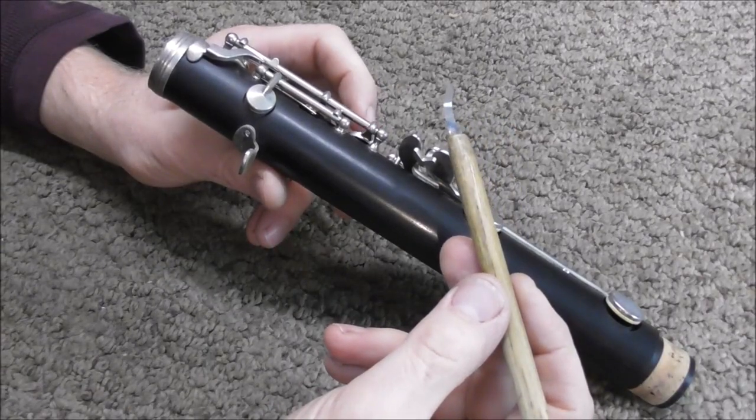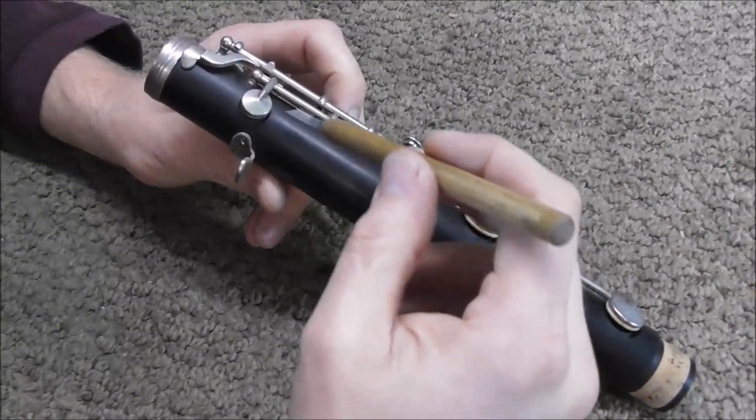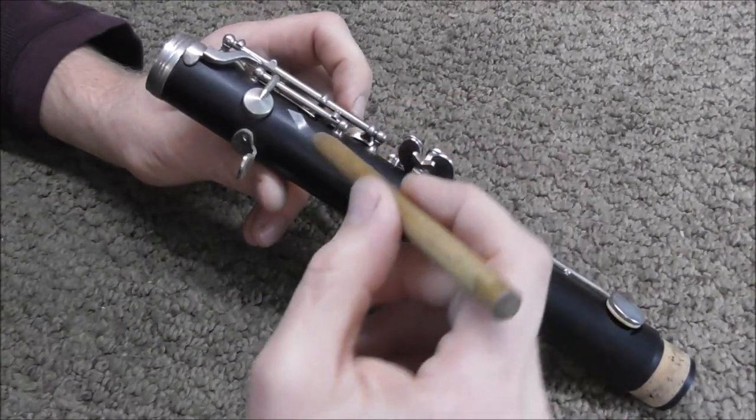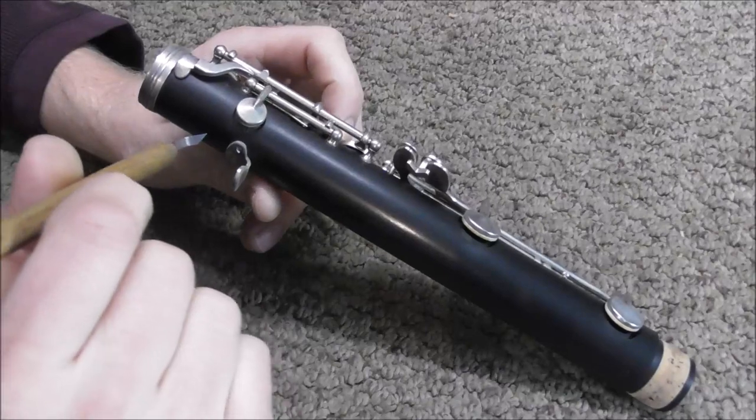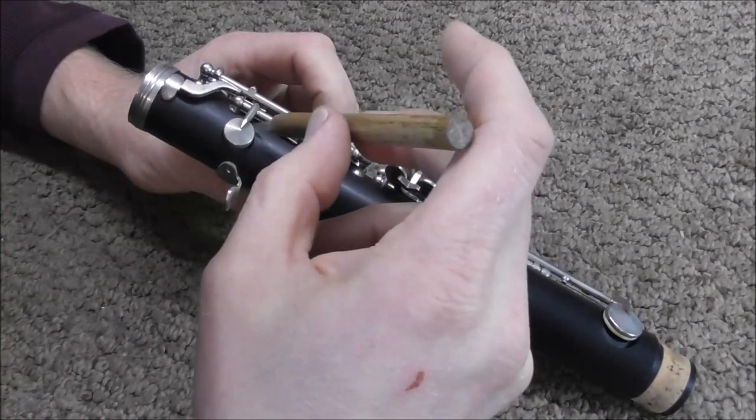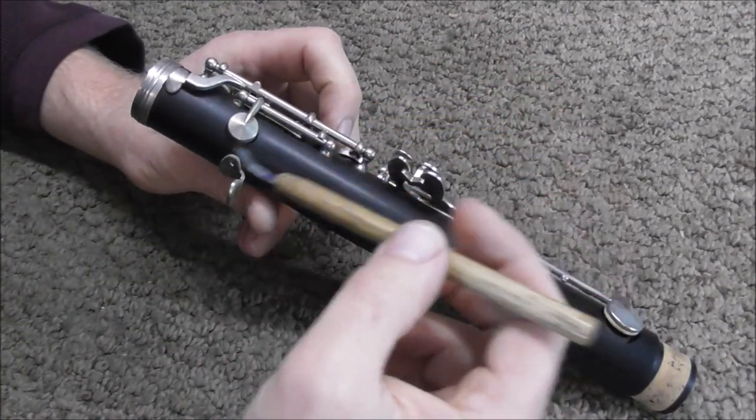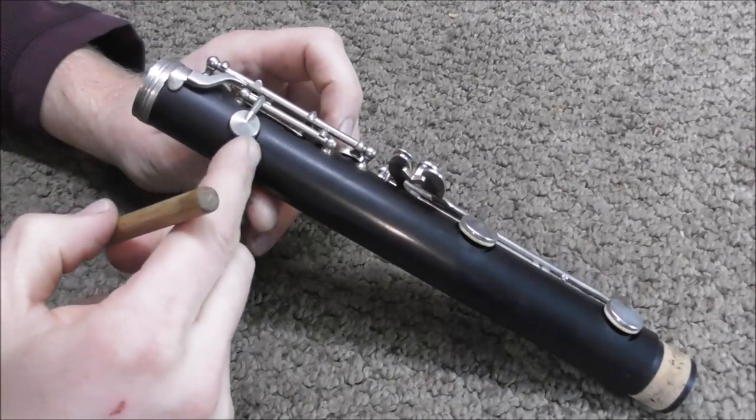But before I show you how to make one I'll show you how to use it. You put it underneath the pad and then you pull it out and there should be some tension when you pull it out. If there's no tension then that means that the pad does not seat in that area.